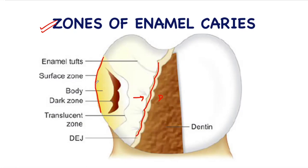Starting from the surface and proceeding towards the DEJ, the zones of enamel caries are classified as: surface zone, body of the lesion, dark zone, and translucent zone.